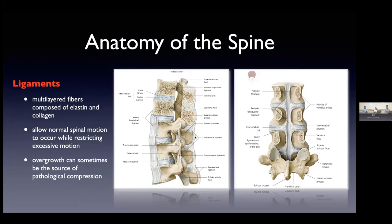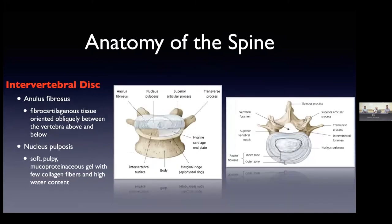But as we age, these ligaments can thicken and enlarge, and ultimately that can lead to pathological compression of the nerves traveling through this area. Looking at the spine from the side, you can see the various attachment points of these ligaments throughout the lumbosacral spine.